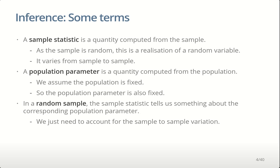We can use that information to work backwards. Given one sample, where do we expect the truth to lie? What values for the true prevalence are consistent with the data? When we talk about things in the population, we treat them as fixed and call them parameters. A population parameter is a quantity computed from the population, assumed to be fixed and unchanging for the period during which we're looking at the population.